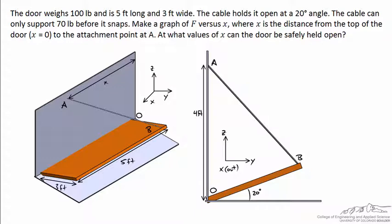We want to make a graph of the tension, or F, in the cable versus x, which is the distance the cable is attached in the x direction from that point O. And we want to figure out at what values of x can the door be safely held open.